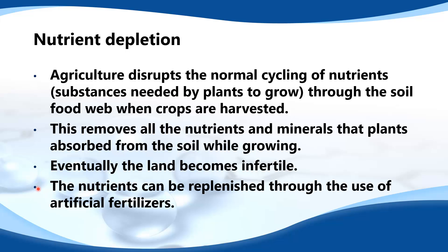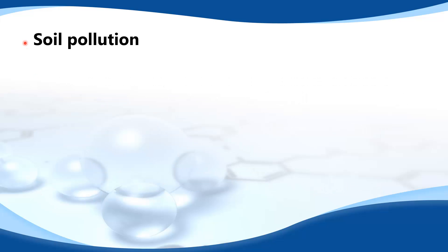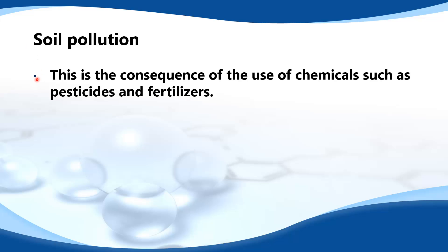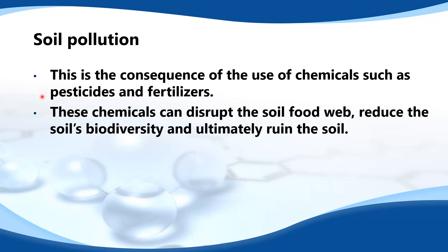The nutrients can be replenished through the use of artificial fertilizers. Next we look at soil pollution. This is a consequence of the use of chemicals such as pesticides and fertilizers.